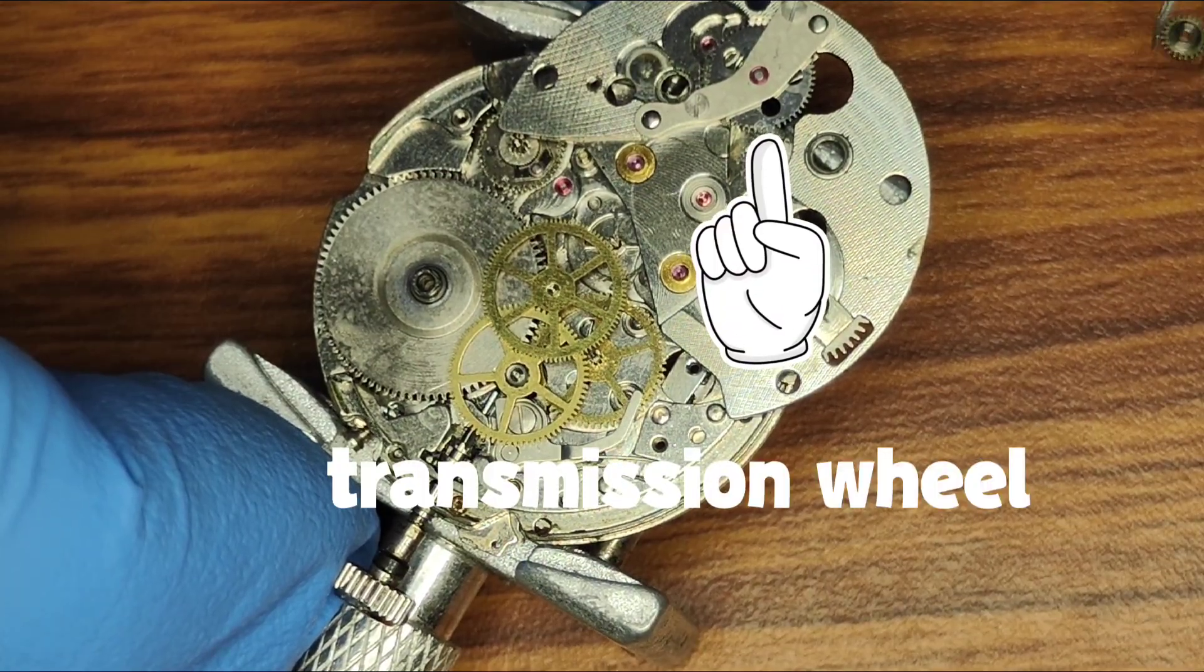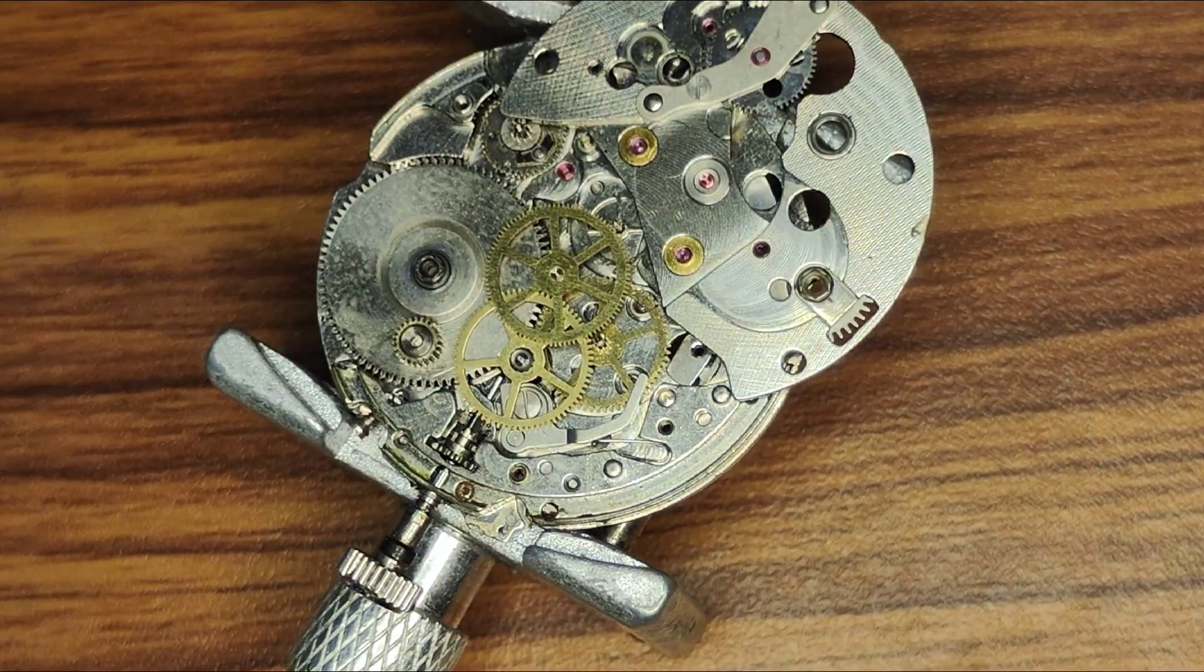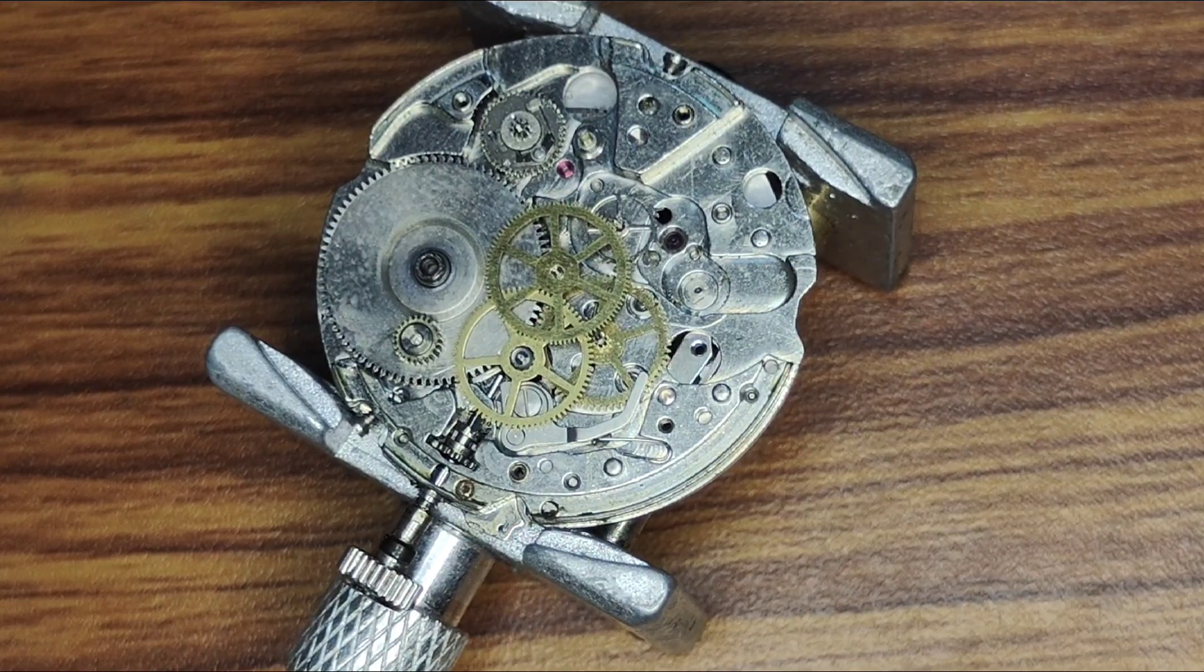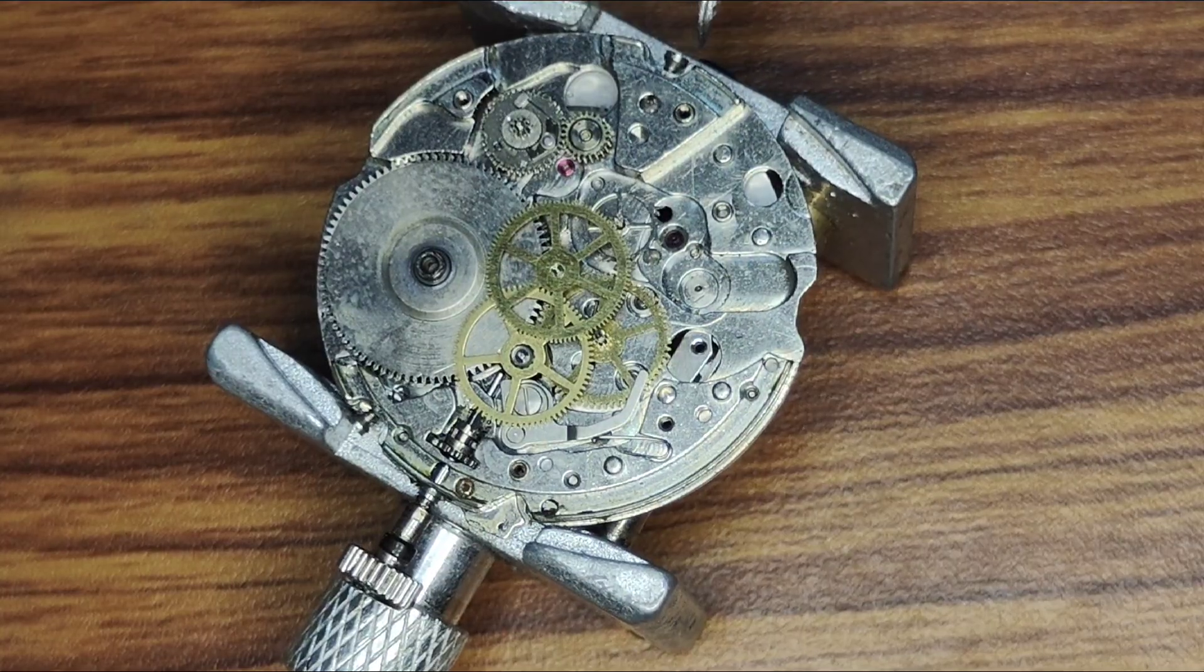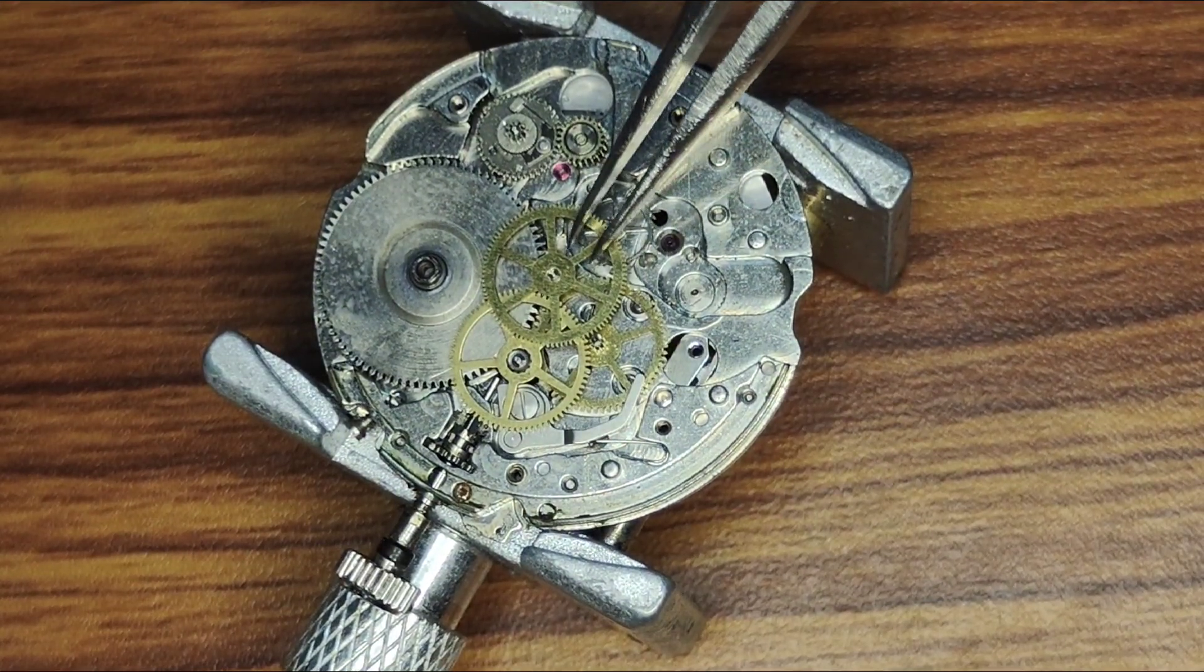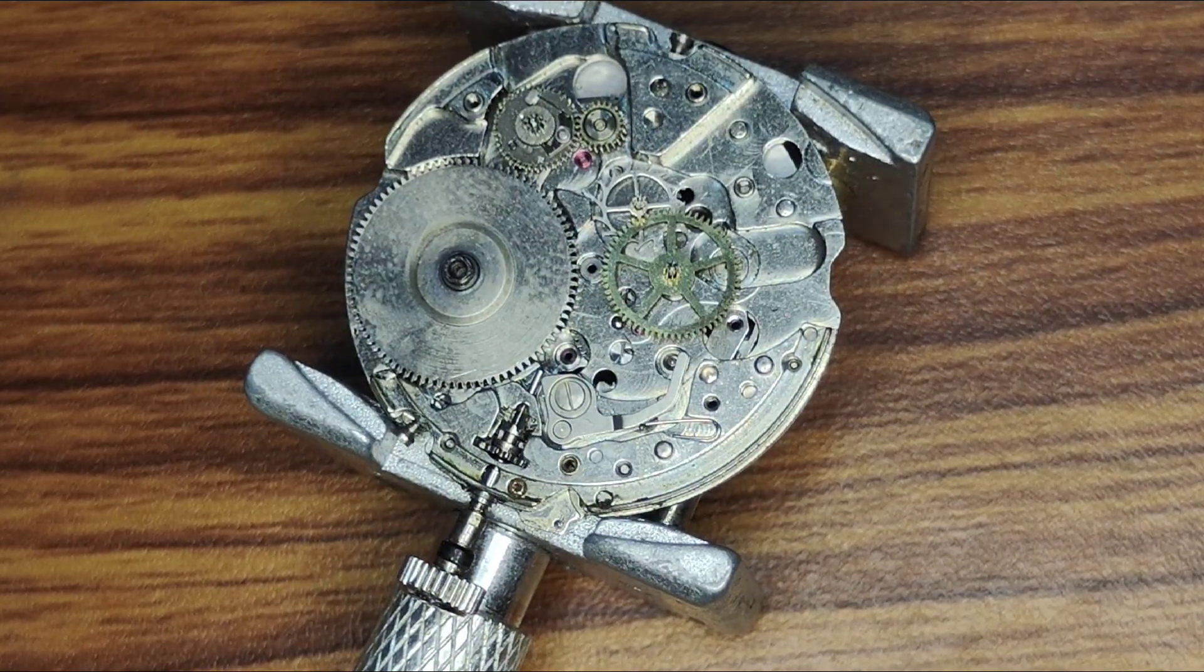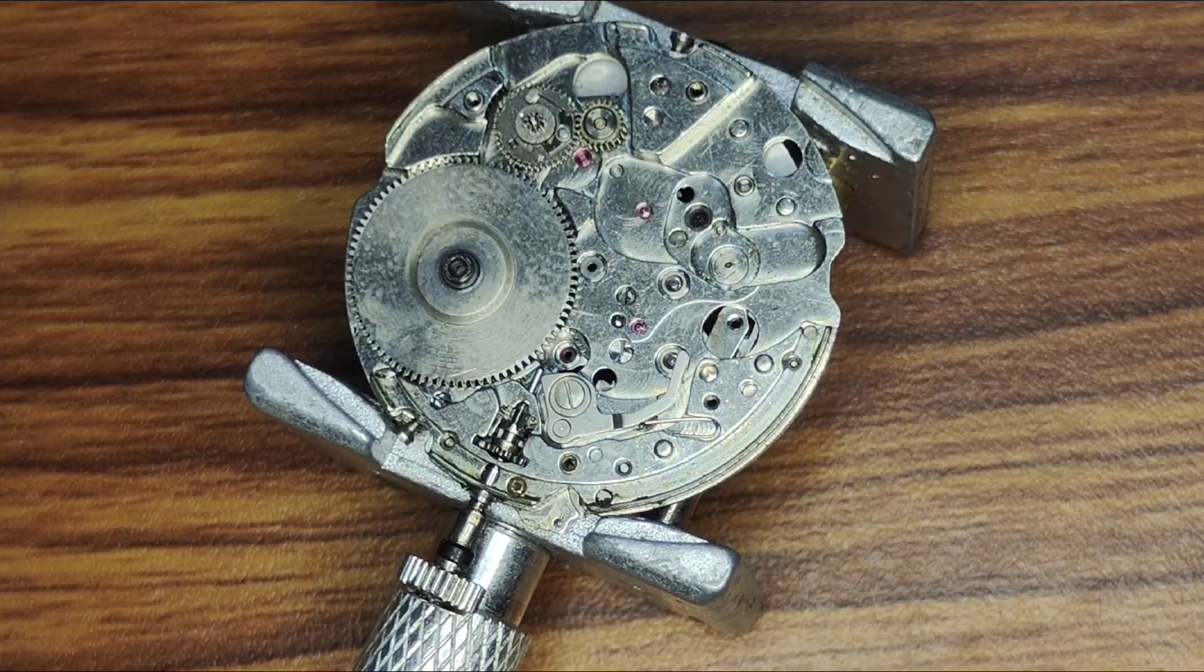This wheel is called second reverser idler and the wheel which was next to ratchet wheel is called transmission wheel. This is sweep second wheel. This one is called large driving wheel and pinion. This is third wheel and escape wheel.